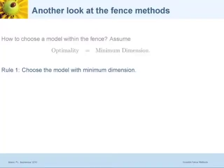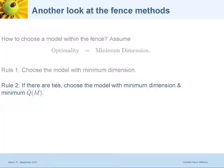Here are the rules for the fence method. Rule number one: you choose the model with the minimum dimension, because that's your criterion — optimality. What if there are ties? In some cases, you could end up with more than one model within the fence with the same dimension. In that case, you choose the model that fits better.